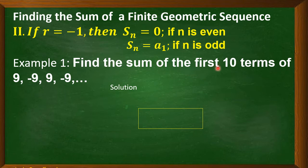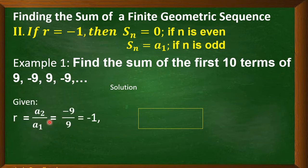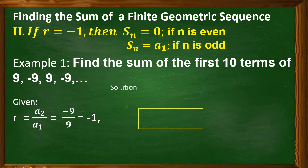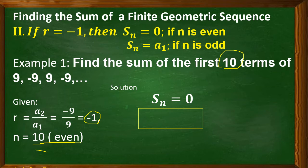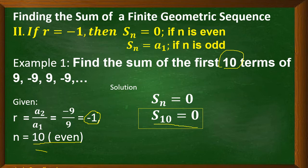Example: find the sum of the first 10 terms of 9, negative 9, 9, negative 9, and so on. First, check the common ratio: a sub 2 divided by a sub 1 gives negative 9 divided by 9, which equals negative 1. Our n is 10, and 10 is an even number. Therefore, S sub n is equal to 0 since r equals negative 1 and n is even. The sum of the first 10 terms is equal to 0 — no long solution needed.